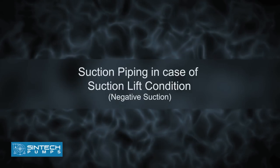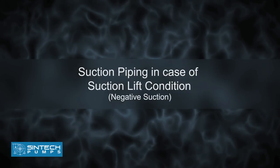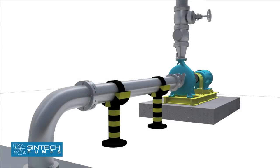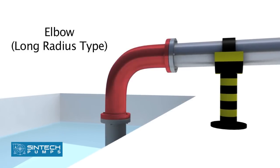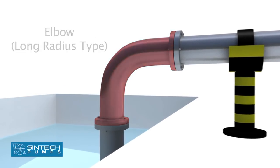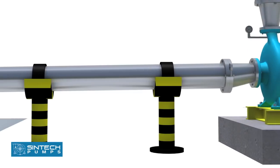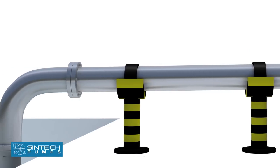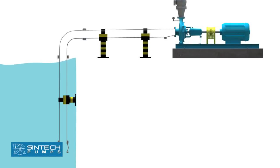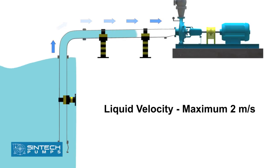Suction Piping in case of suction lift condition, Negative Suction. The piping run and the connection fittings should be properly aligned and supported separately. The elbow should be of long radius type. All suction piping must be airtight. The suction pipe should be sized to ensure the liquid velocity of not more than 2 meters per second.